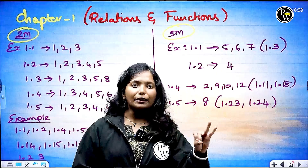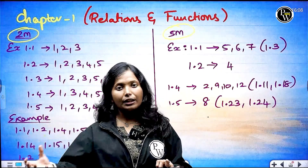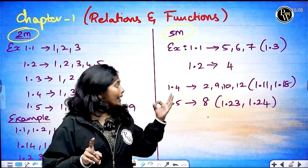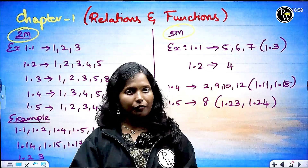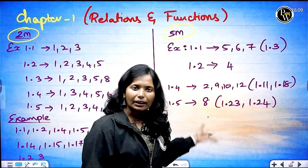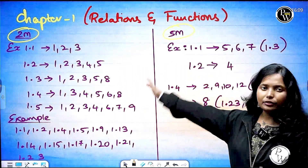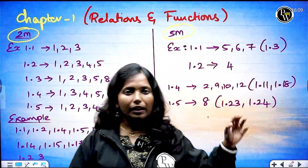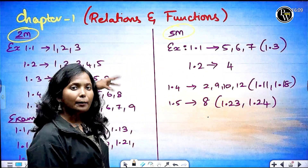The second topic is functions — relations and functions. There are different forms: representations of functions, table form, graphical form. The next question is f of x — find the value of f of x. That is the important 5 marks. The last topic is the composition of functions. Here are 2 marks. One is 4 marks, the first one is going to be 5 marks.